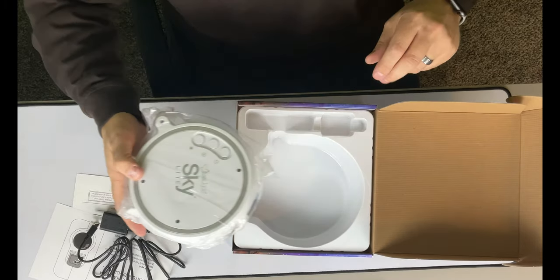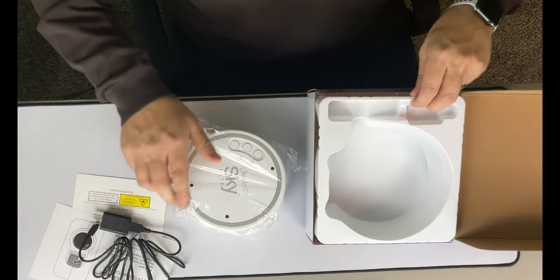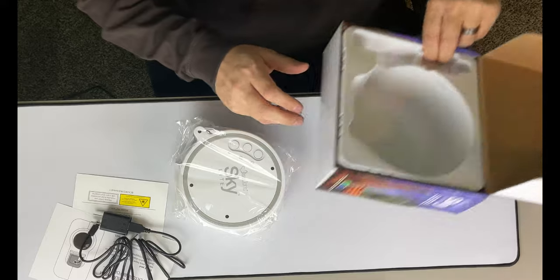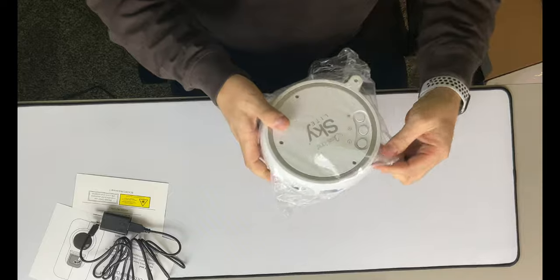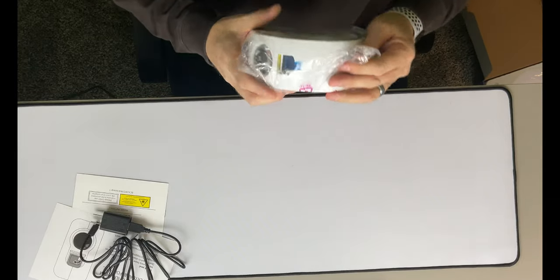And then we just have the Skylight here. I don't believe there is anything else in the box. Nope, so we are going to get rid of that. And it comes in this plastic. You have to get open this plastic here.